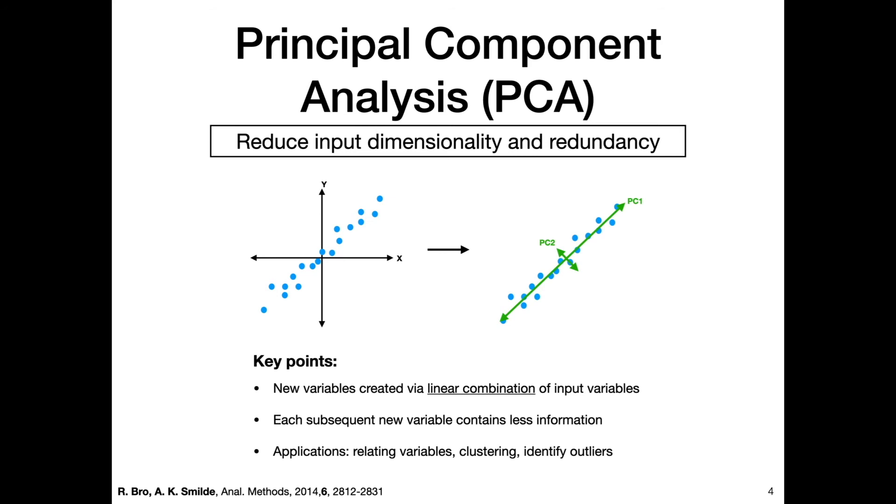Just as a recap: principal component analysis reduces input dimensionality and redundancy. Key points are new variables are created via a linear combination of input variables, and each subsequent new variable contains less information.